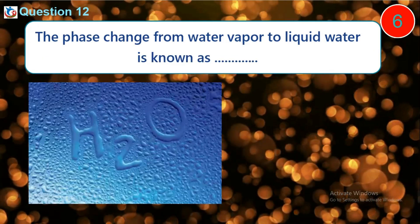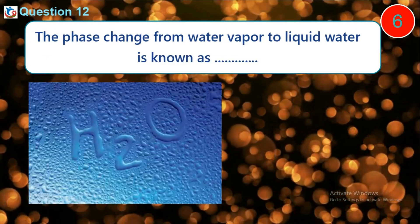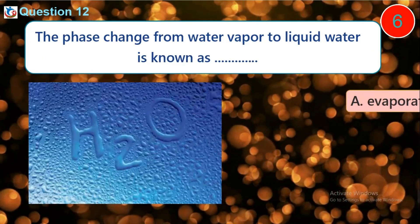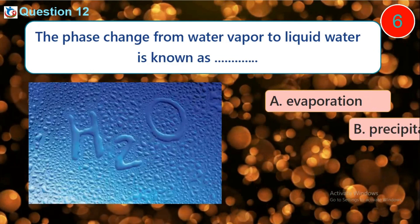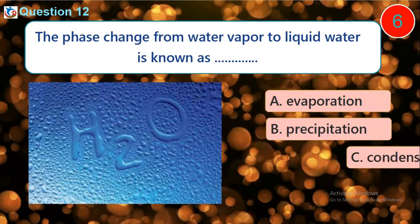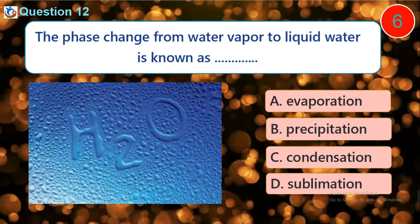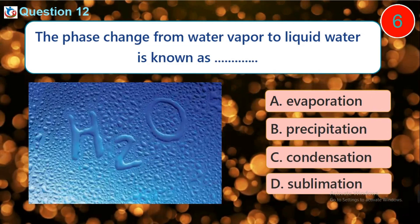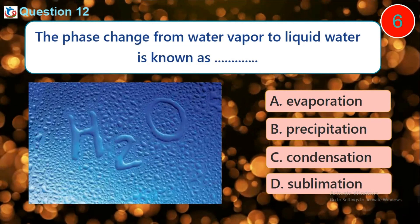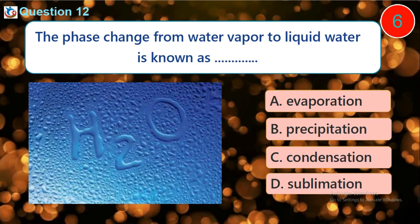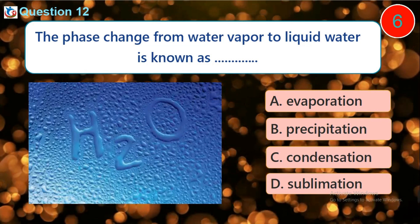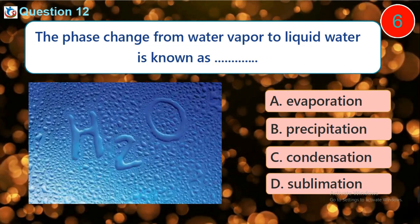Question 12. The phase change from water vapor to liquid water is known as dash. A. Evaporation. B. Precipitation. C. Condensation. D. Sublimation.